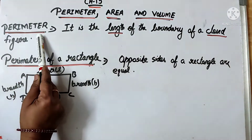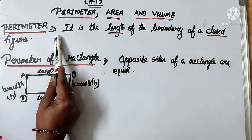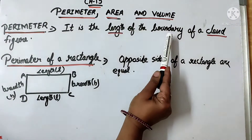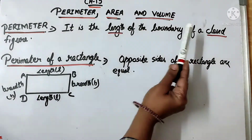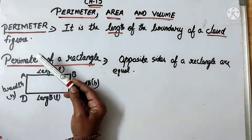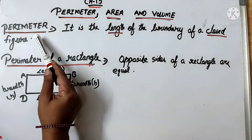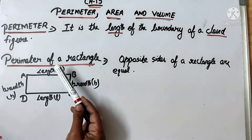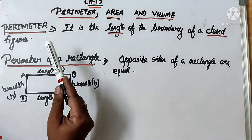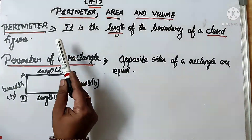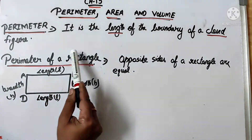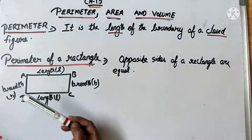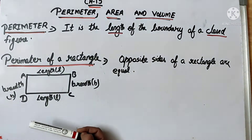Now what is perimeter? Perimeter is the length of the boundary of a closed figure. That means if it is a closed figure — we have learnt about polygons, and a polygon is a closed figure — the length of the boundary of a closed figure is called its perimeter.